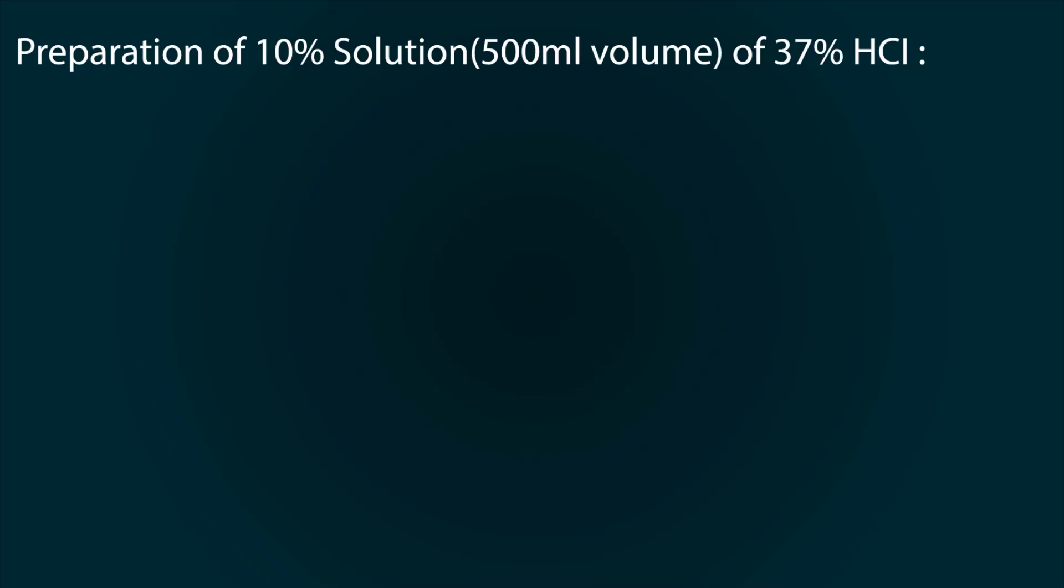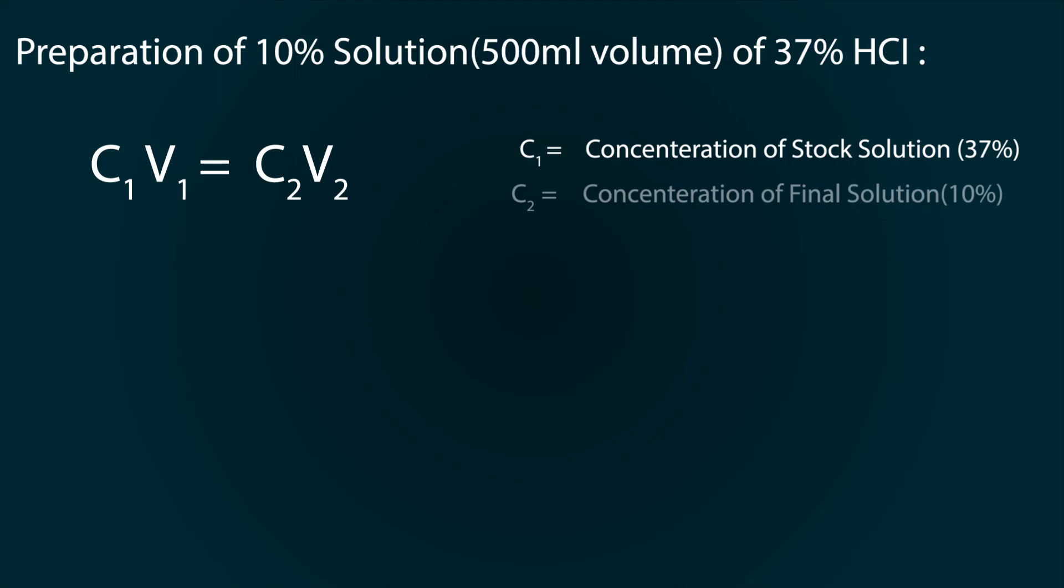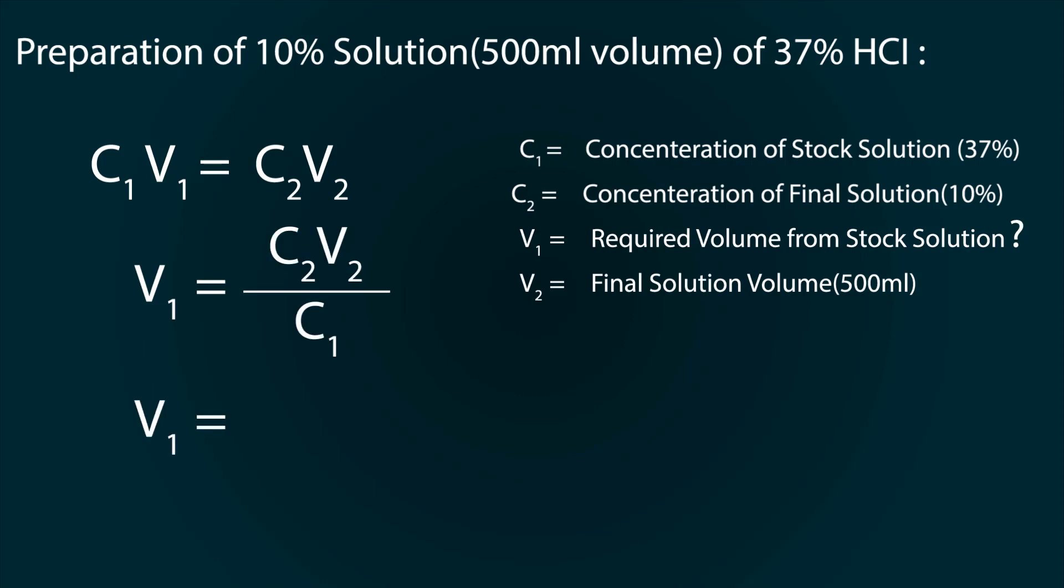Here is the calculation for preparation of 10% HCL solution from 37% HCL. The formula of concentration is C1V1 equals C2V2, where C1 is concentration of stock solution (37%), C2 is concentration of final solution (10%), V1 is required volume from stock solution, and V2 is final solution volume (500 milliliters). Rearranging the formula and putting in the values, we get 135.1 milliliters.